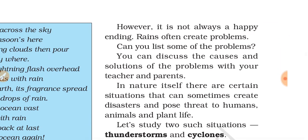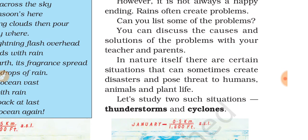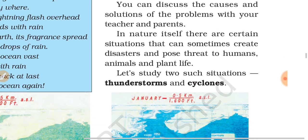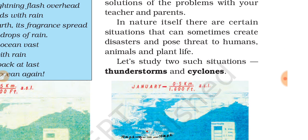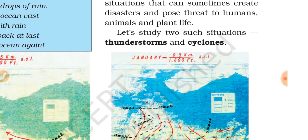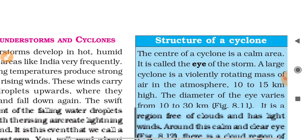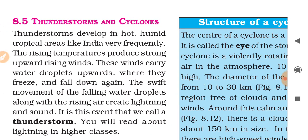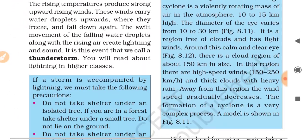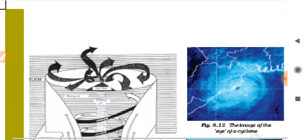However, it is not always a happy ending — rains often create problems too. You can discuss the causes with your parents and teachers. In nature, certain situations can create disasters and pose threats to humans, animals, and plant lives. We will study two such situations: thunderstorms and cyclones. These are also major threats in addition to floods. We will read about thunderstorms and cyclones in the next class.